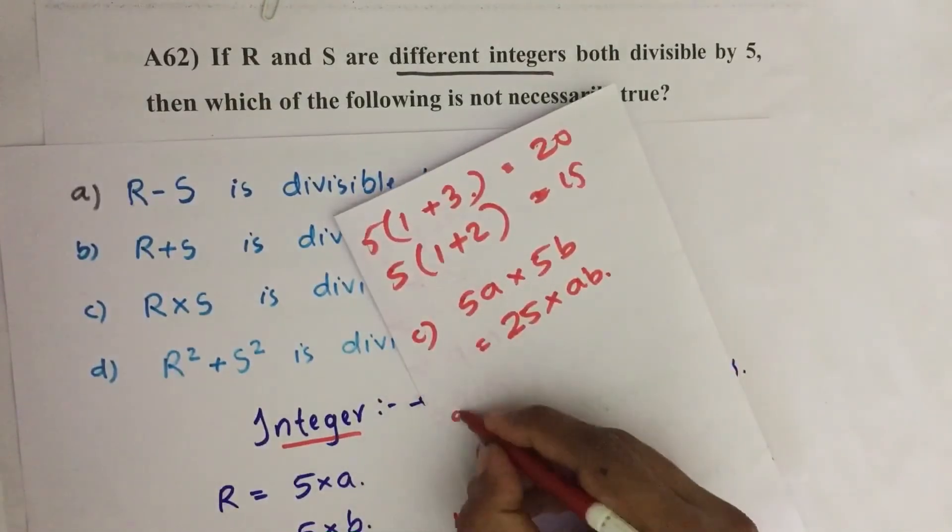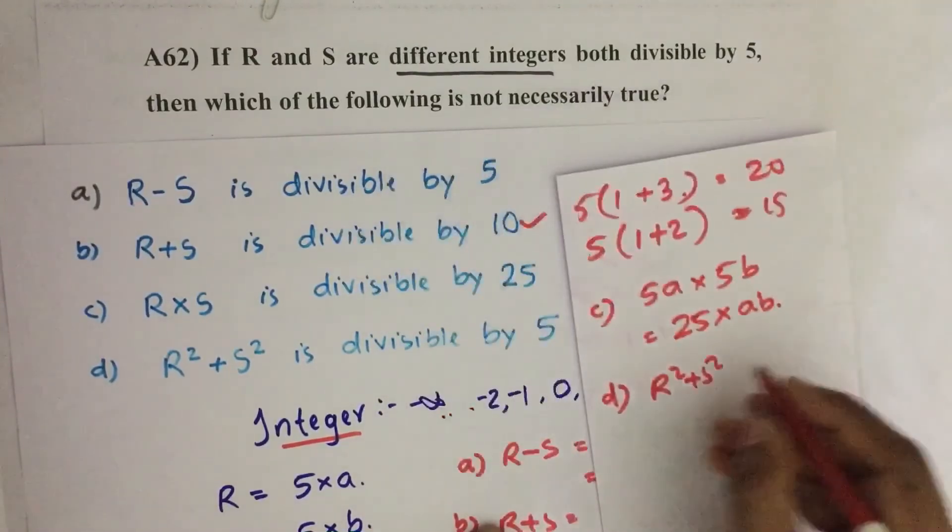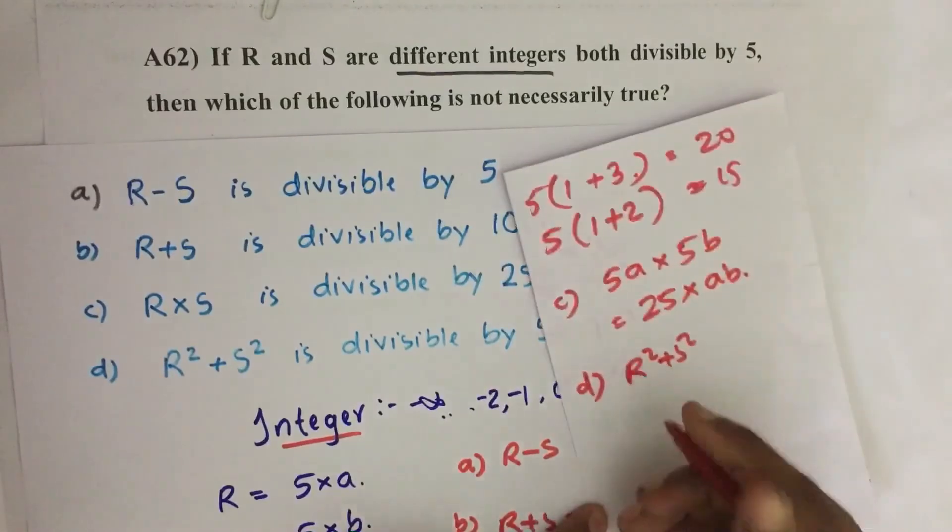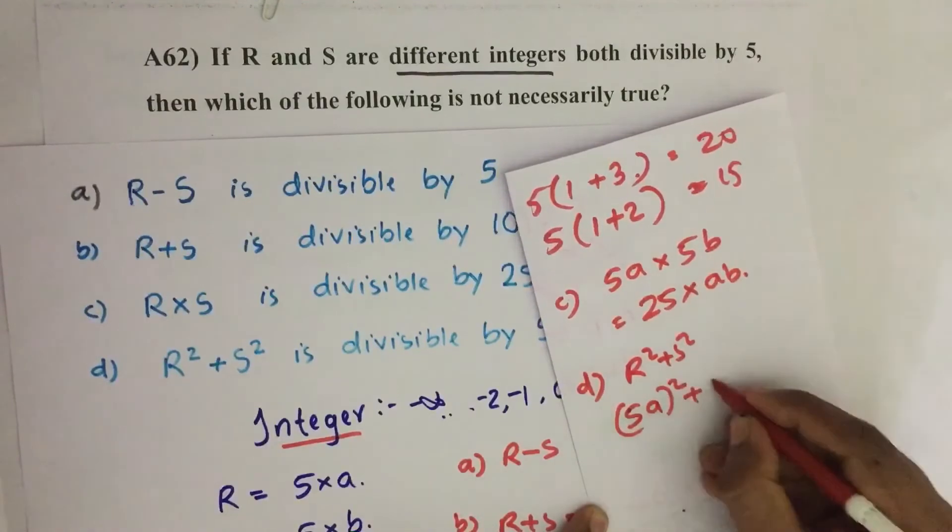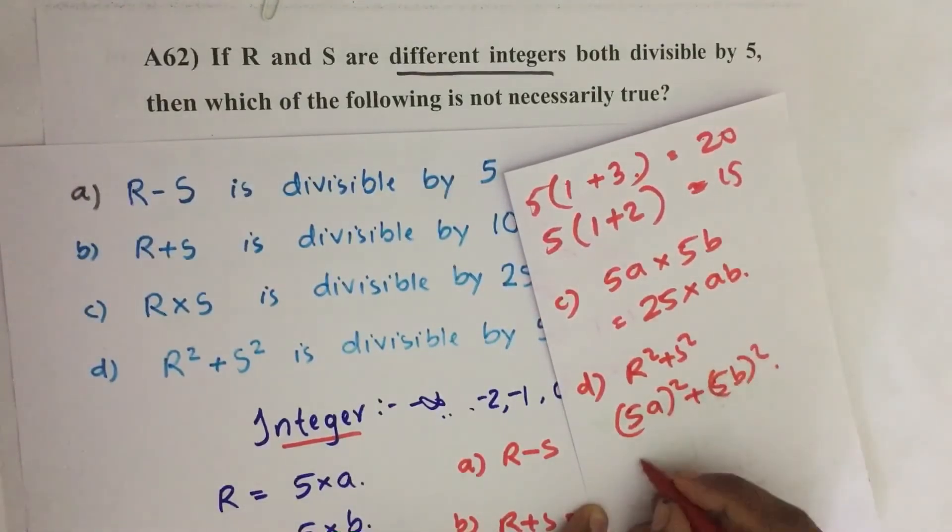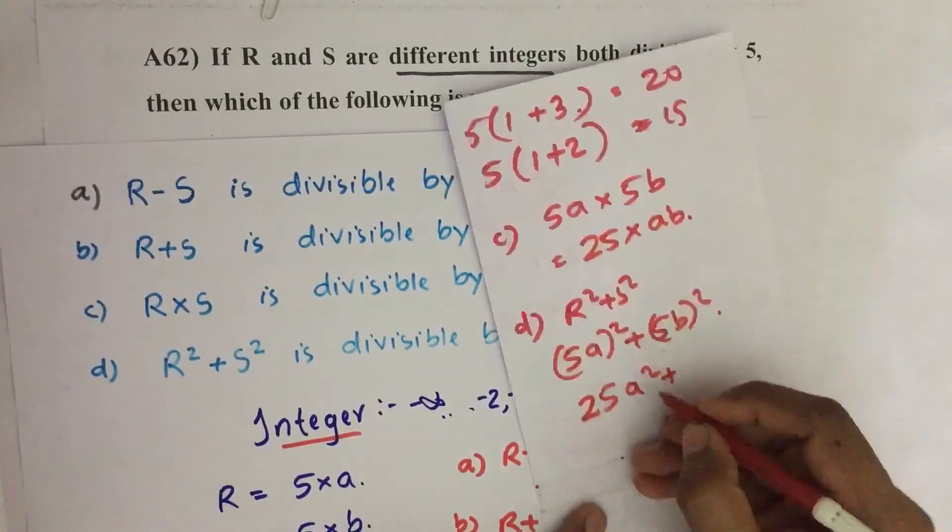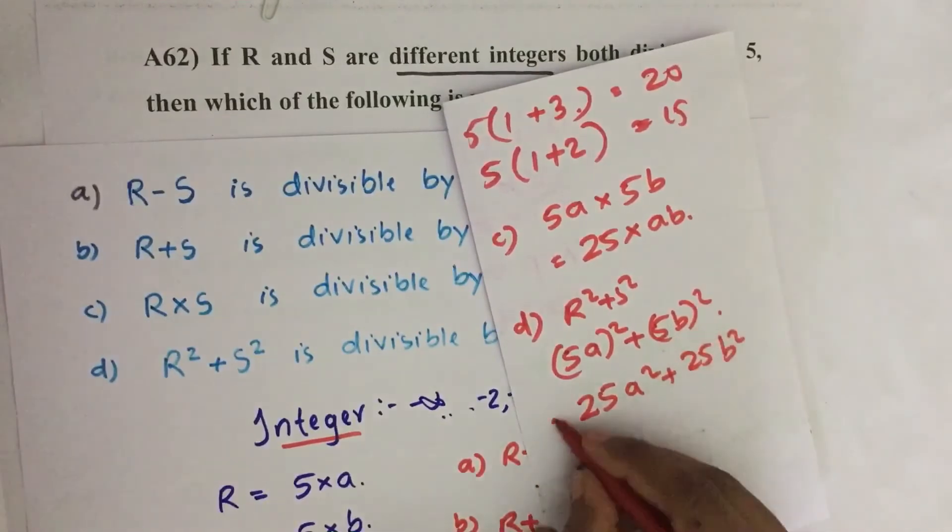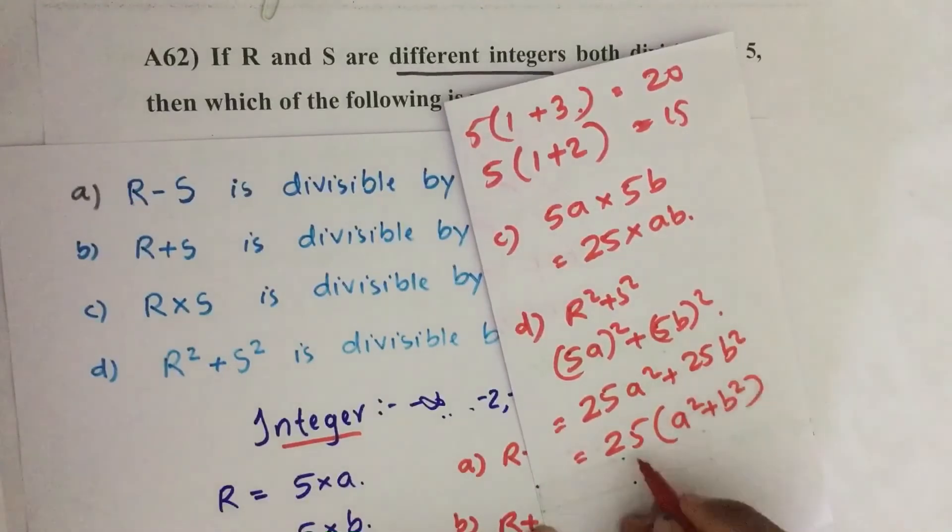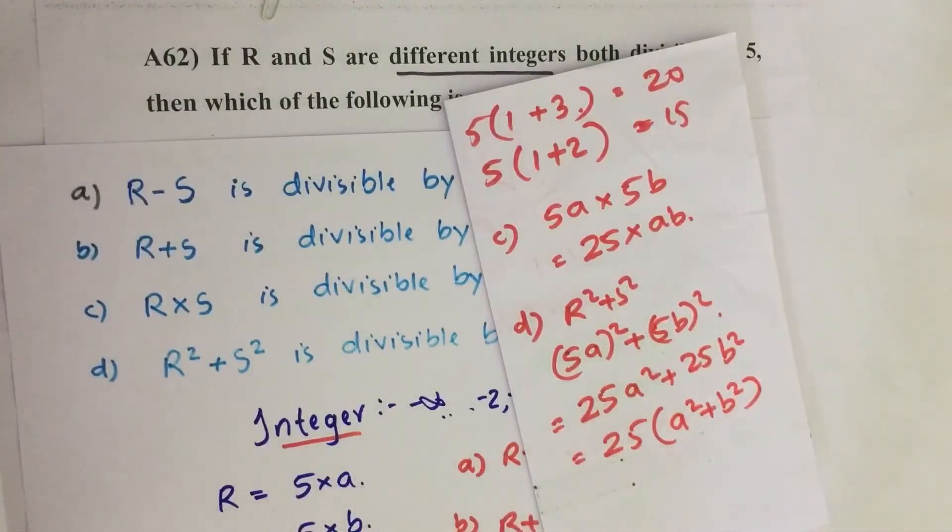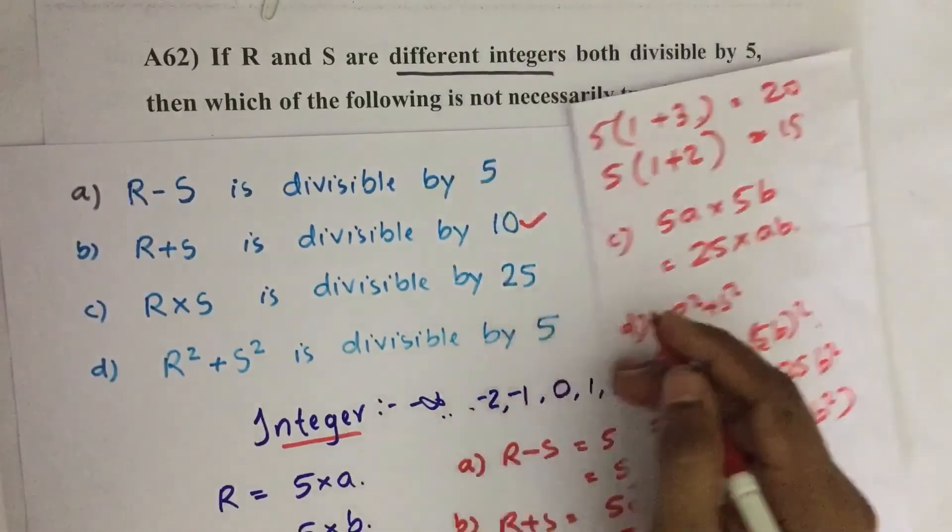Then fourth statement, option D: R square plus S square is divisible by 5. R square equals 5A whole square plus 5B whole square. This we can write as 25A square plus 25B square. I am taking 25 outside, then 25 into A square plus B square. 25 is always divisible by 5, whatever value we are giving to A square plus B square. Therefore, this statement is also always true.